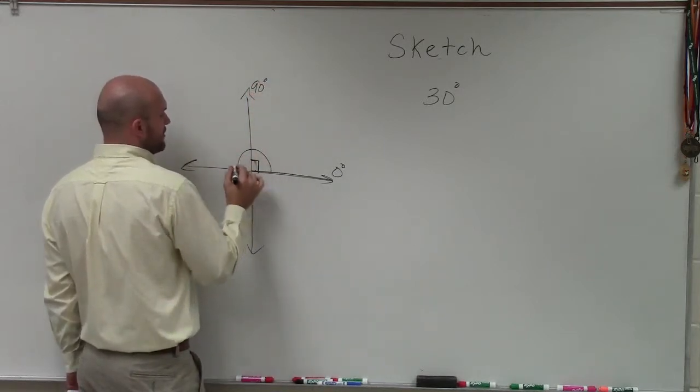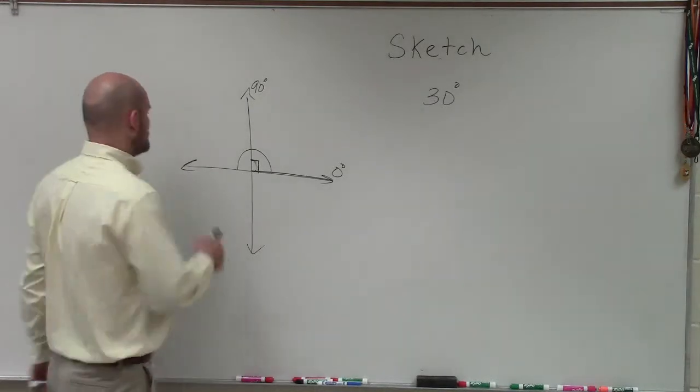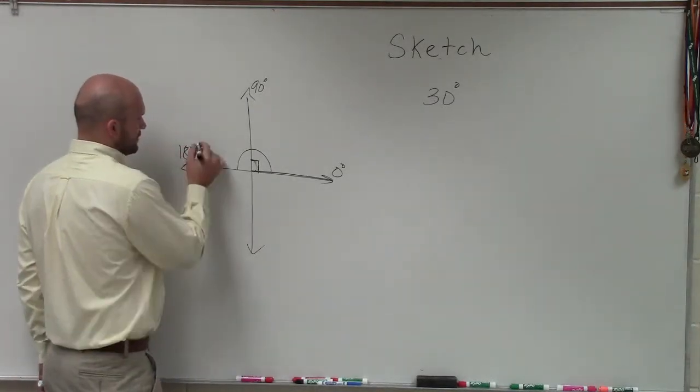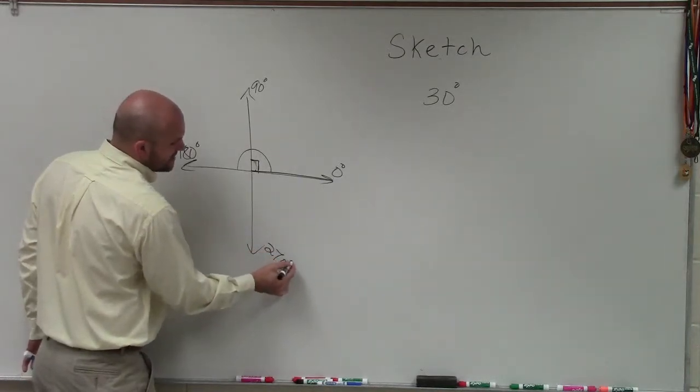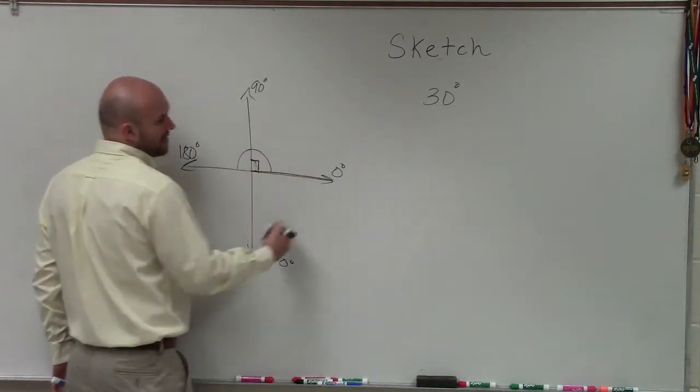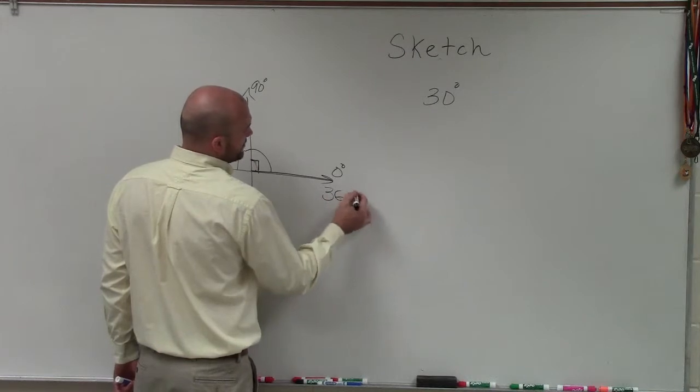If I rotate all the way around, that's what we call a straight angle, which would be 180 degrees. 180 degrees plus 90 would be 270 degrees. And if we rotate all the way around a circle, we know that's going to be 360 degrees.